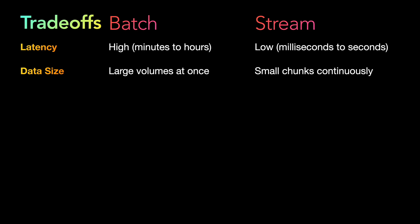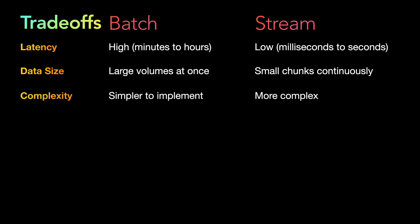In terms of data size, batch processing handles large volumes of data at once, while stream processing handles continuous processing of data in small chunks. Regarding complexity, batch processing is much simpler to implement. Stream processing is more complex — not just in development but also in maintenance. If there is a problem in a batch, you can debug batch processing systems much faster, but stream processing can be very difficult to debug.